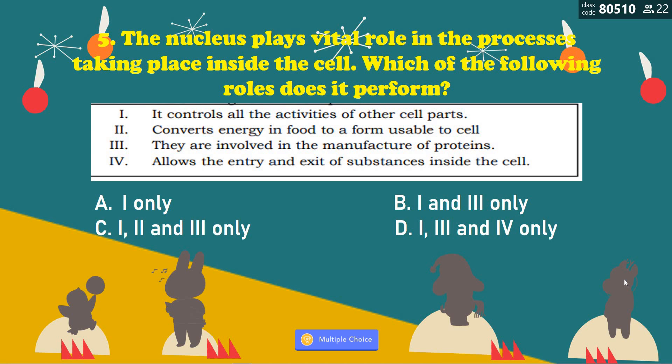Number 5: The nucleus plays a vital role in the processes taking place inside the cell. Which of the following roles does it perform? 1. It controls all the activities of other cell parts. 2. Converts energy and food to a form usable to the cell. 3. They are involved in the manufacture of proteins. 4. Allows the entry and exit of substances inside the cell. Is it A, one only; B, one and three only; C, one, two, and three only; or D, one, three, and four only? That is correct — it's letter A, one only.